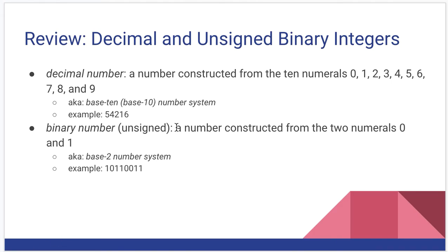So, again, just as a review, a decimal number is a number constructed from the 10 numerals 0 through 9. This is the base 10 number system. Binary number, again unsigned, is a number constructed from the two numerals 0 and 1, and we call this the base 2 number system.